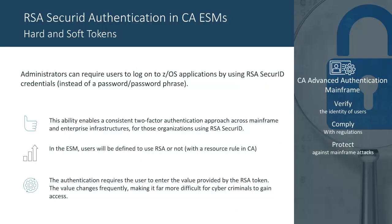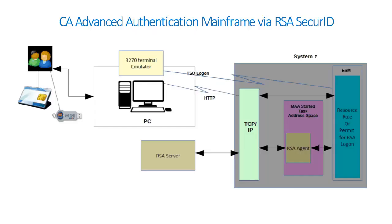Administrators can require users to log on to ZOS applications by using RSA SecurID credentials instead of a password or password phrase. This feature enables a consistent two-factor authentication approach across mainframe and enterprise infrastructures. The user opens a 3270 session to the mainframe and logs in with the user ID and RSA token code and/or associated PIN.